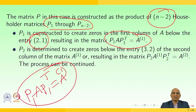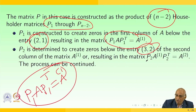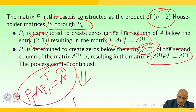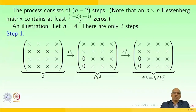P₂ is determined to create zeros below entry (3,2) of the second column of matrix A₁, resulting in P₂·A₁·P₂ᵀ = A₂. Similarly, P₃·A₂·P₃ᵀ = A₃. The process consists of N-2 steps. Note that an N×N Hessenberg matrix contains at least (N-2)(N-1)/2 zeros.